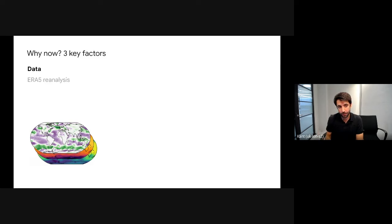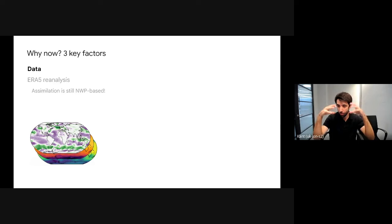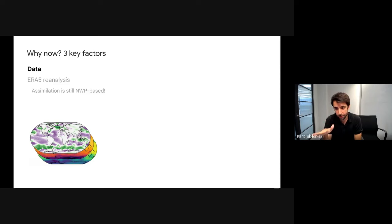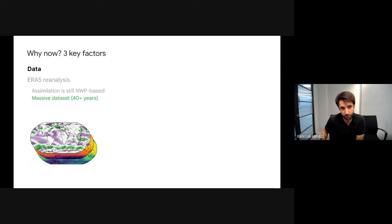The ERA5 dataset is a simulation — going from raw weather sensors like satellites, ocean buoys, and ground measurements to an estimation of the true weather state. This is still based on classical physics, not machine learning. We reanalyze more than 40 years back, giving us a massive dataset. It's also very high quality data because a lot of compute effort has been amortized into it.